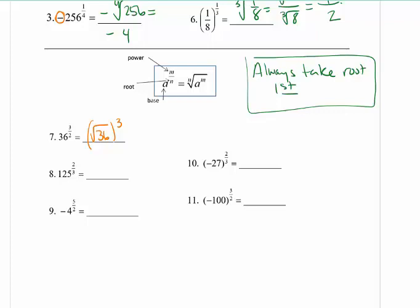On number 7, the 3 halves means I'm going to take the square root of 36 first, and then raise it to the third power. Square root of 36 is 6. In your calculator that's 6 times 6 which is 36, times another 6, which is 216. Going to number 8, we're going to take the root first, which is the cube root of 125. Cube root of 125 is 5, and we're going to square that, which gives me 25.